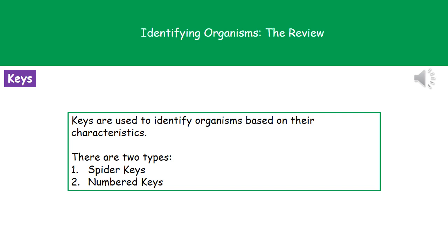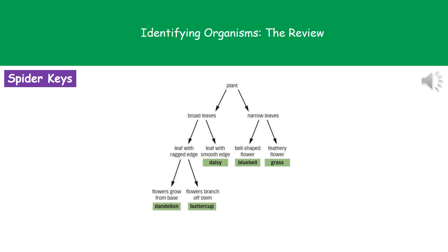What we're going to do is look at the characteristics those organisms have, and by using one of two types of key we can then identify them. The two types of key used in biology are spider keys and numbered keys. The spider key is set out with a series of questions you answer and follow the arrows.